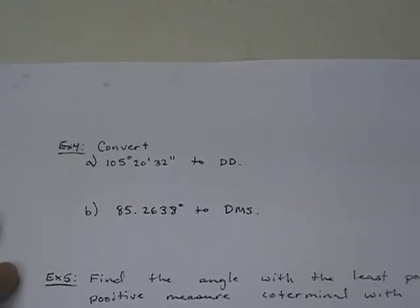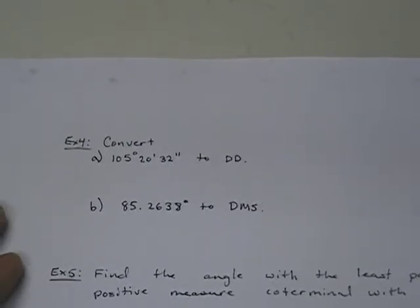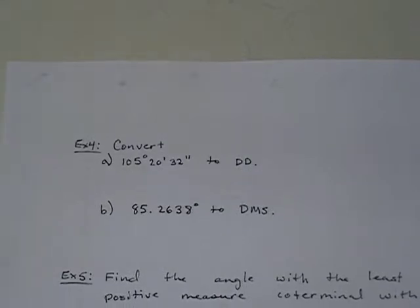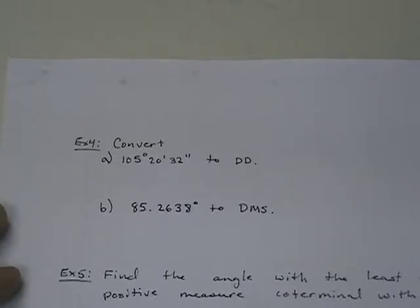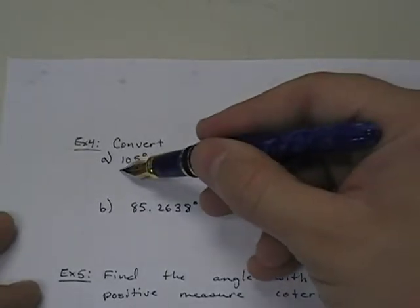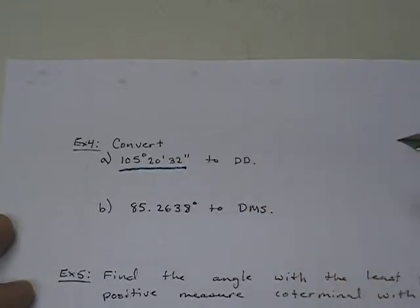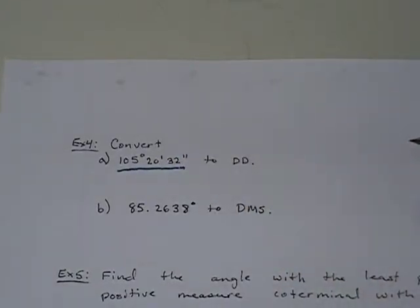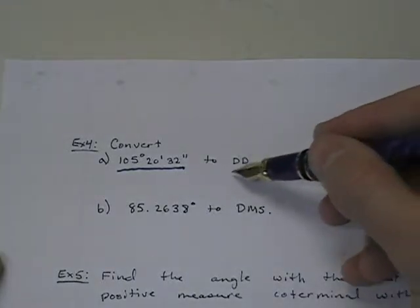Both of these problems are very much like any other conversion — if you want to convert feet to inches, if you want to convert pounds to kilograms, it's a very similar process. In this scenario I've got DMS: degrees, minutes, and seconds. I have three units, which is the equivalent of having yards, feet, and inches. And I want to make them all into one unit, and that one unit is degrees.